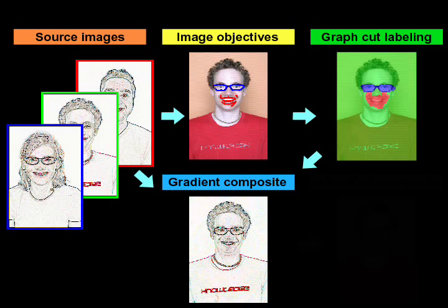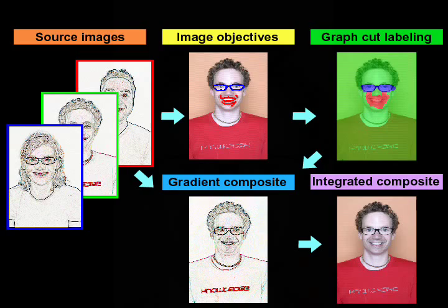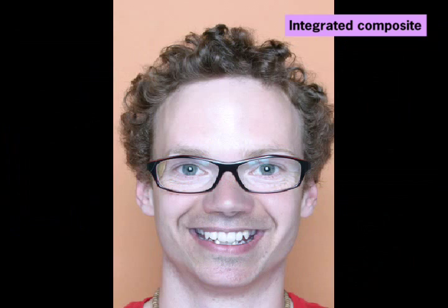The labeling is used to create a gradient composite. We then integrate this gradient field to create an integrated composite. This gradient domain fusion process removes the artifacts.